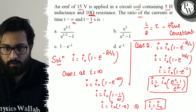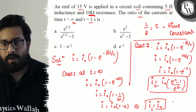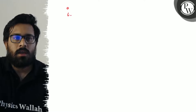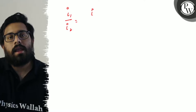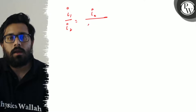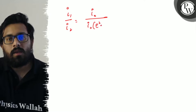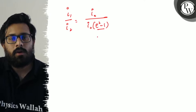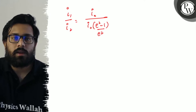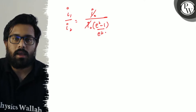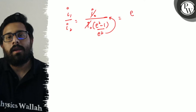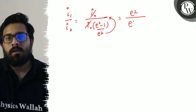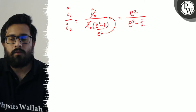You have to calculate the ratio of i1 upon i2. Solving on the next page: i1 upon i2 equals i naught divided by i naught times (e square minus 1) upon e square. The i naught cancels, and it comes out to be e square upon e square minus 1.